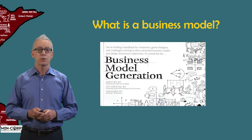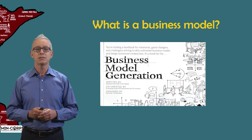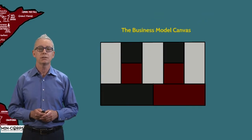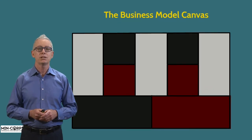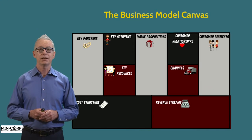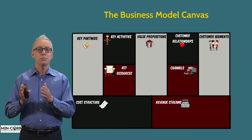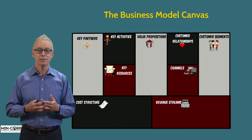In the book Business Model Generation, Alex Osterwalder helped take the abstract concept of a business model and make it more concrete and manageable by introducing the business model canvas. Here you can see the business model canvas laid out in nine building blocks. These building blocks are independent components and they're also very interdependent.